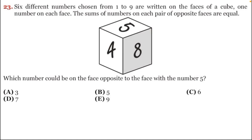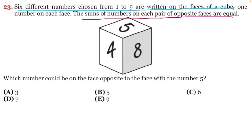We will elucidate the statements of this question. The first statement: six different numbers chosen from one to nine are written on the faces of a cube. Most importantly, there are only six numbers written on the cube — exactly like a dice. Six different numbers are written, chosen from one to nine. So we leave some numbers out; we choose others for the six sides. One number on each face.